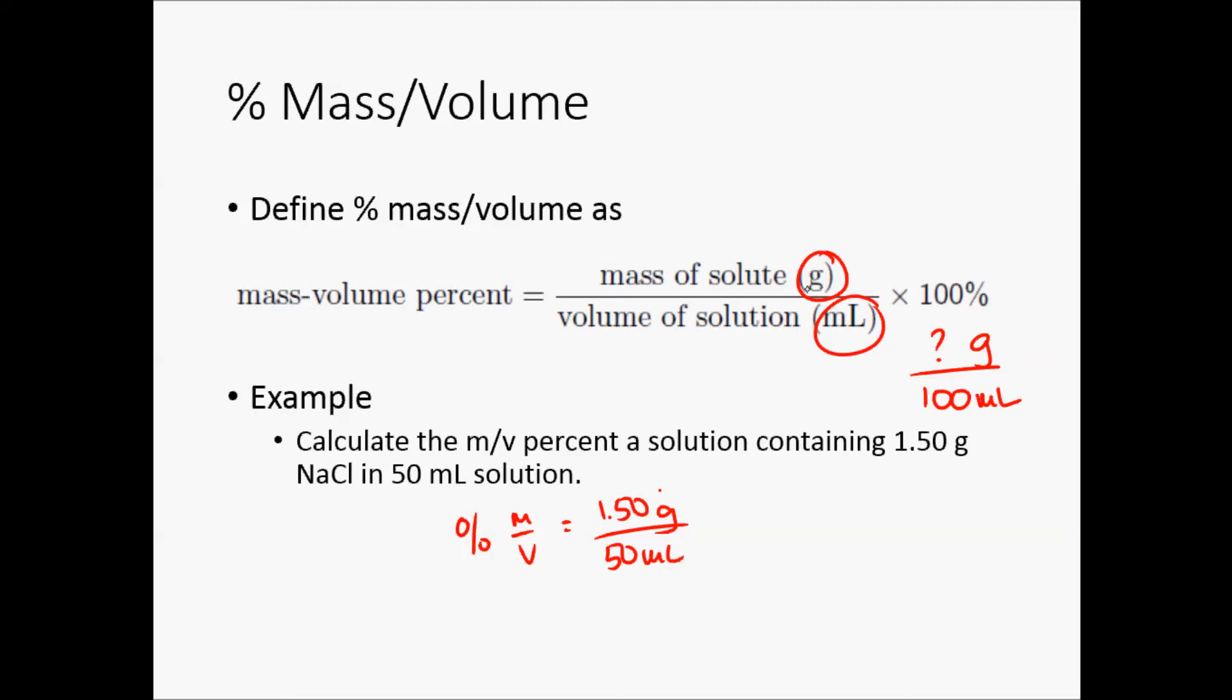Note that we have our mass on top, volume at the bottom, and here we don't have to convert because we already have grams and milliliters, but if not, we have to convert to grams and milliliters times 100%. That gives us 3%.